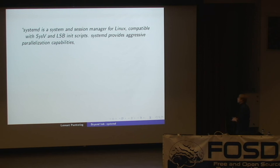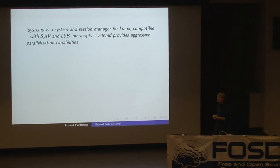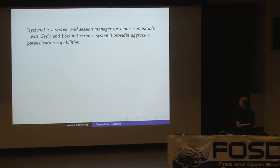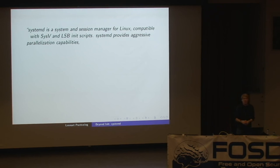System D provides aggressive parallelization capabilities. What that means in an init system context is that we start everything in parallel. The word 'aggressive' here means it's probably a little bit beyond what existing init systems do. On a later slide, we'll go into detail on what precisely this aggressive parallelization means.